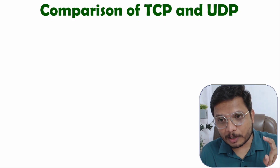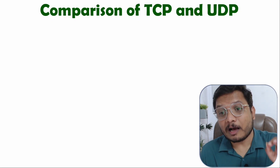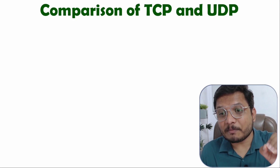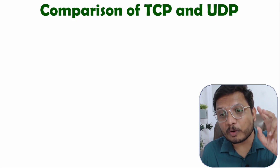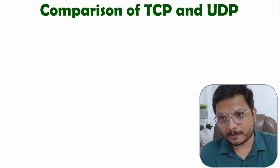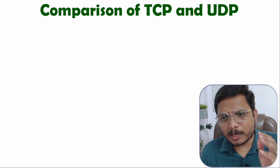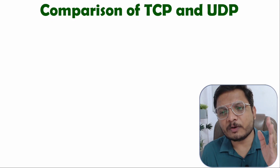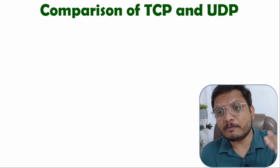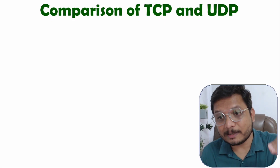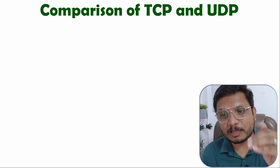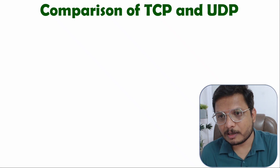Along with the transport layer we access TCP and UDP. Both of these protocols are in the transport layer. To understand the differences between TCP and UDP protocol, first you need to understand in which situation each protocol is being used. Let me give you some examples.